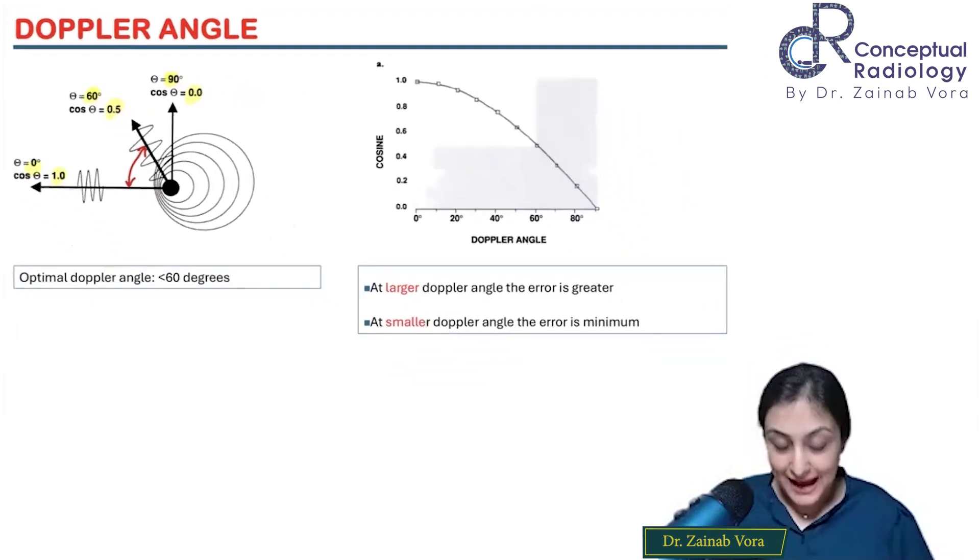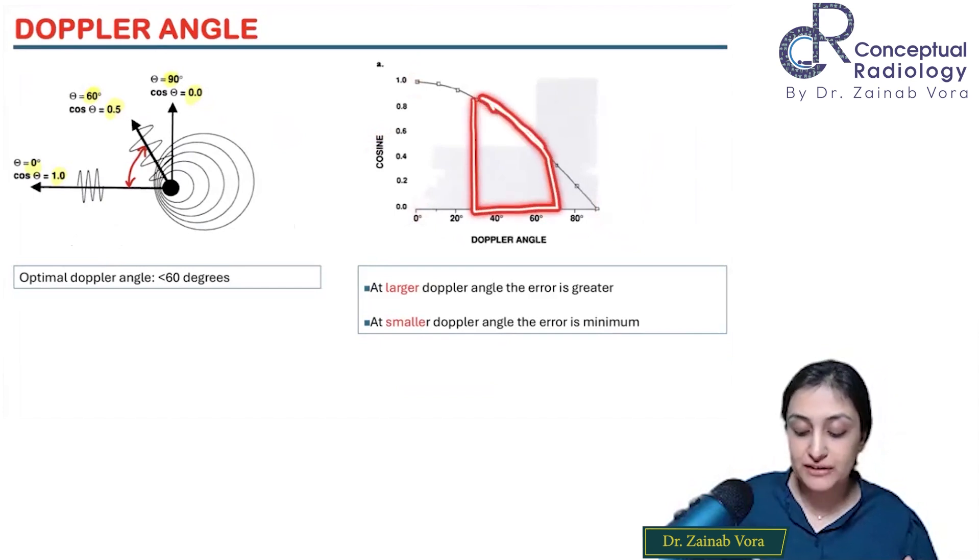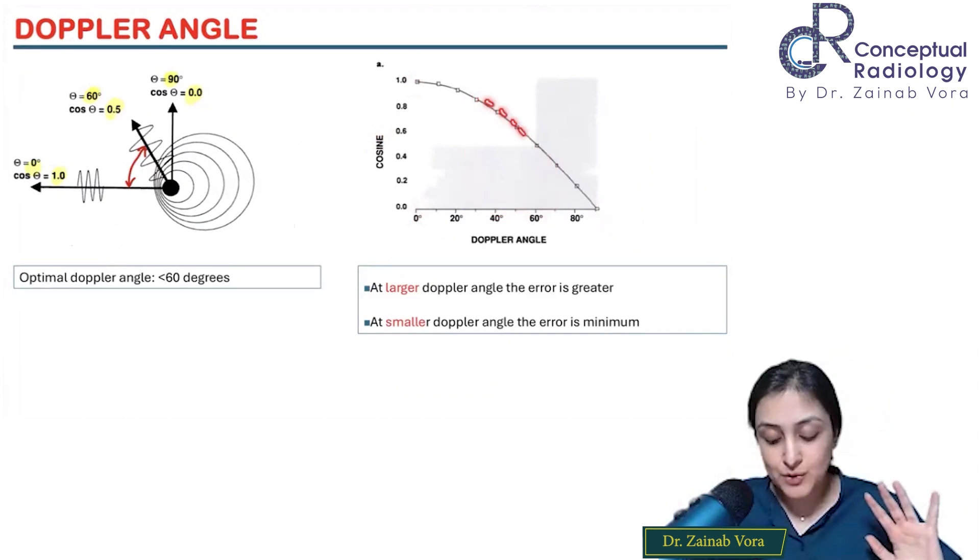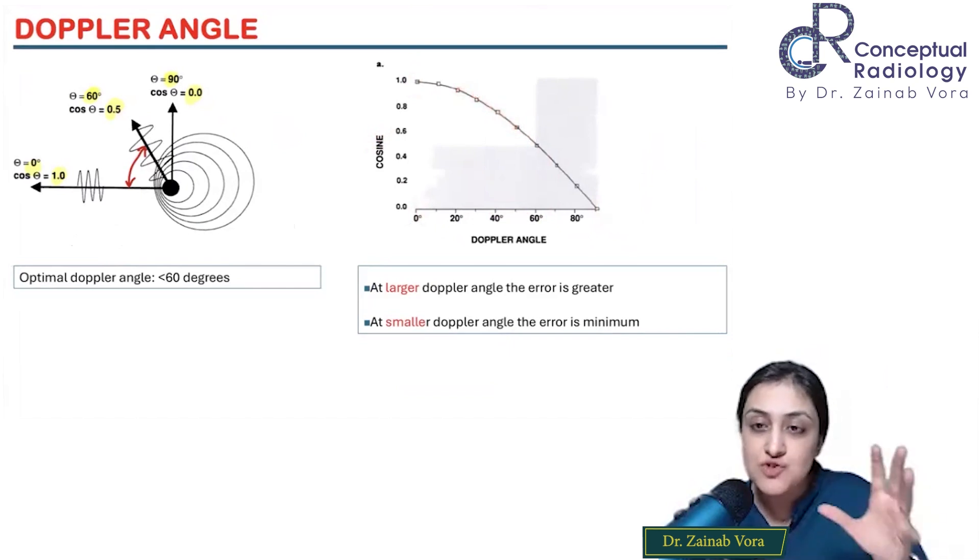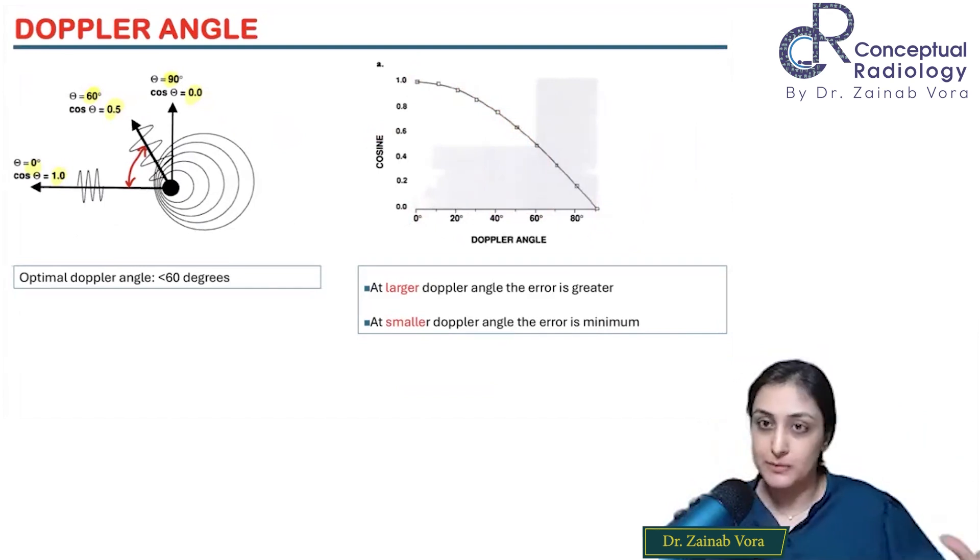You can draw this graph as well. Cos 90 is 0, cos 0 is 1. If you're in between this range, somewhere close to 60 to 45 degrees, it's more or less a plateau. My error here is minimum. This is what I want to be - near 60 to 45 degrees, which is a realistic angle. Less than 60 degrees is optimal angle.